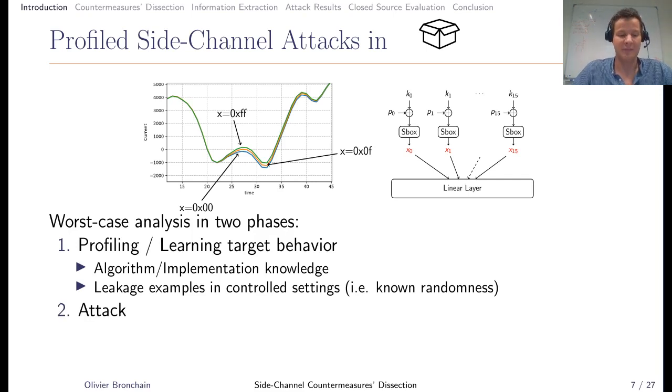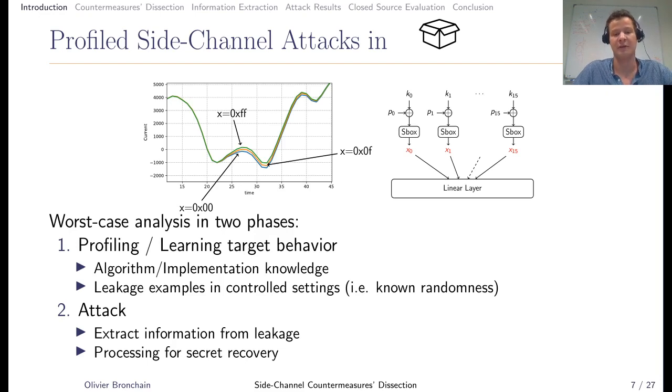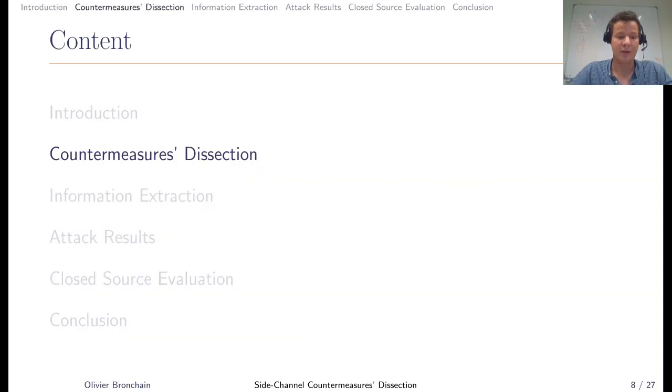Then he can perform the attack. He is no more in that control setting, so he does not know the randomness anymore, and can only extract information from the leakage. He extracts information and processes it to perform the attack. As an example, he can do a key recovery attack.